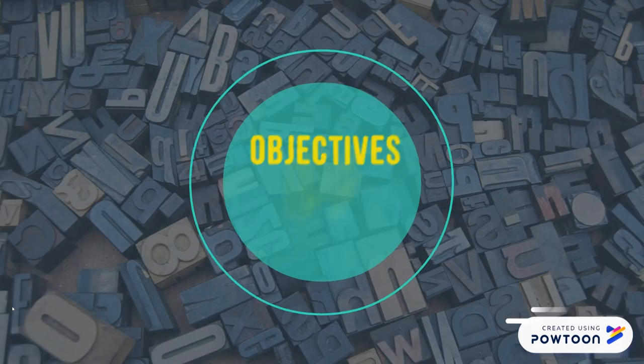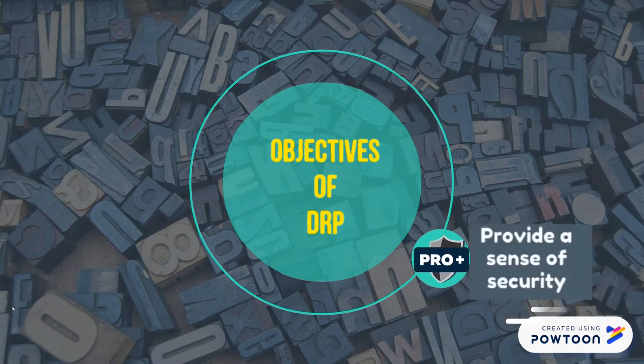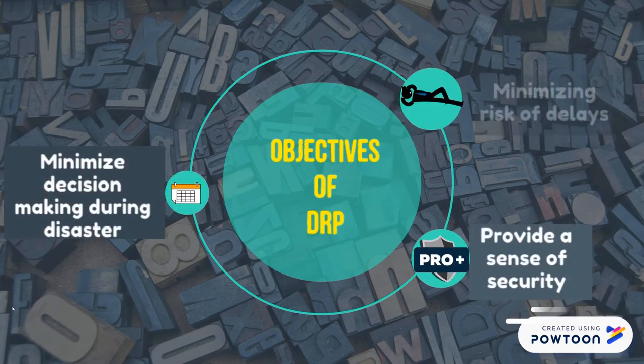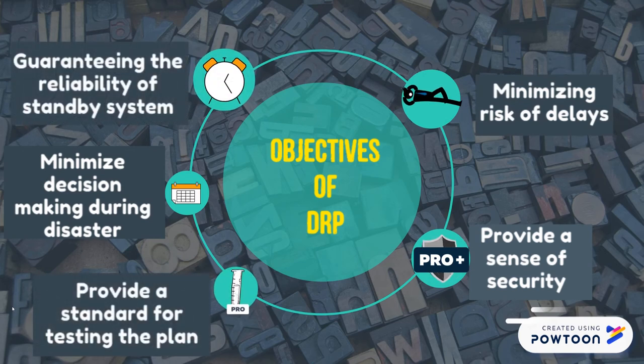The objectives of DRP are to provide a sense of security, minimize decision-making during disaster, minimize risk of delays, guarantee the reliability of standby systems, and provide a standard for testing the plan.